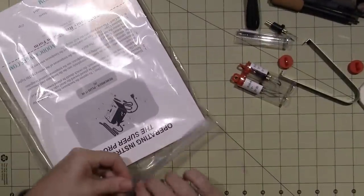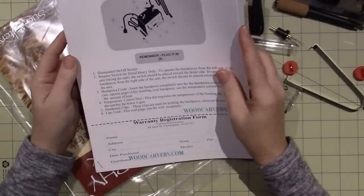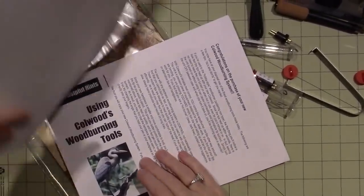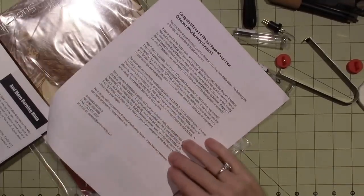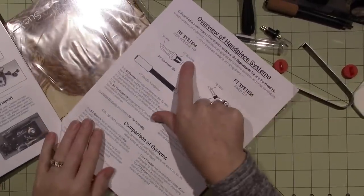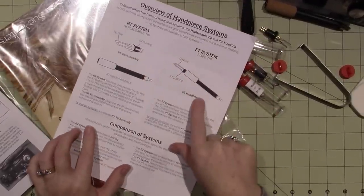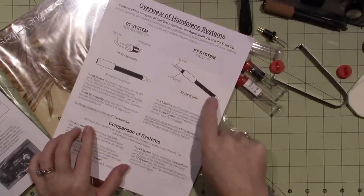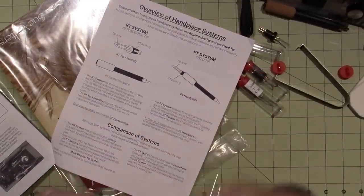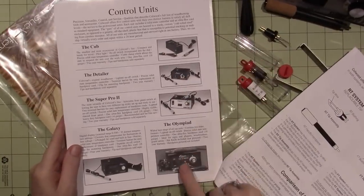You also get this instruction book - the manual with the machine. I'll have to read that. This is the warranty and helpful hints. This talks about the RT system, which is the replaceable tip system, and then the fixed tip system. You can buy hand pieces where you can't take the tip off - you have to buy the whole thing. It tells about their other machines that they sell.